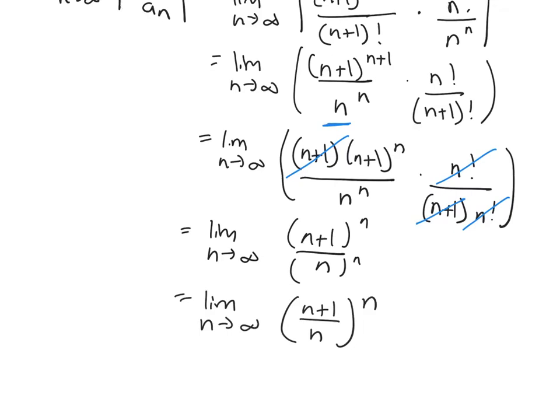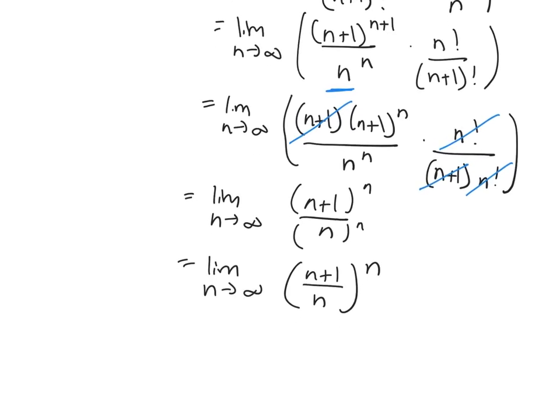And now I need to calculate this limit. This limit is not as easy as the last one because my exponent also involves n here. So inside, my limit is still like the last one. It's 1 over.